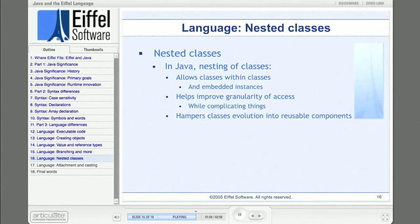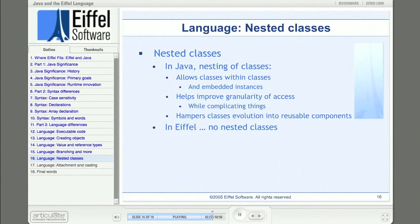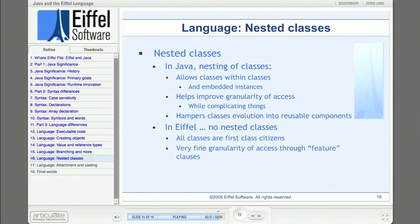Nested classes are always tied to some enclosing class, so they don't really have a life cycle of their own and can't evolve on their own into autonomous, reusable software assets. In Eiffel, there are no nested classes — even though each non-trivial class will be related to others, it does not belong to any other. It's not necessary to have nested classes for access control purposes because Eiffel's feature clause provides very precise access control. Any Eiffel class is free to grow and evolve on its own into a valuable, reusable software component.